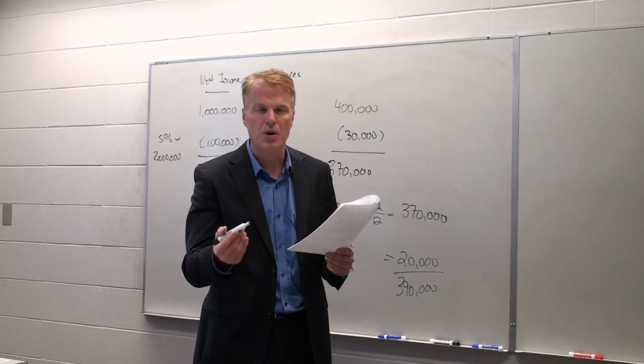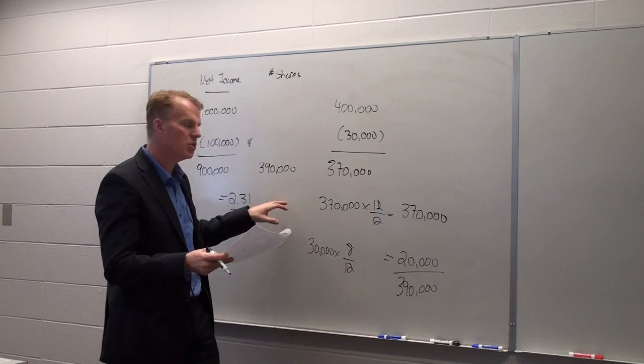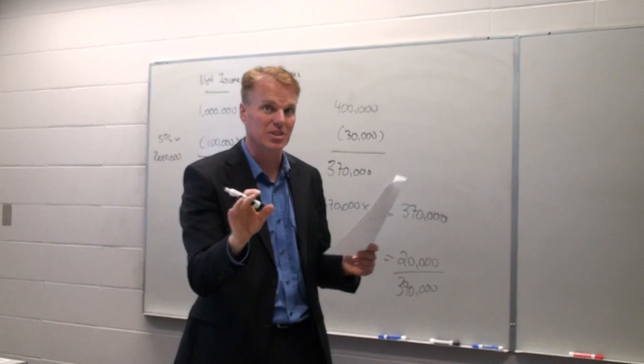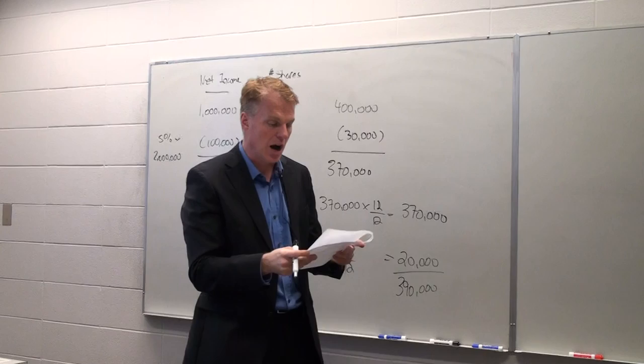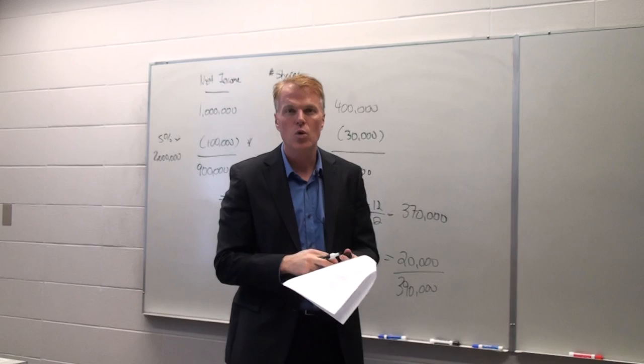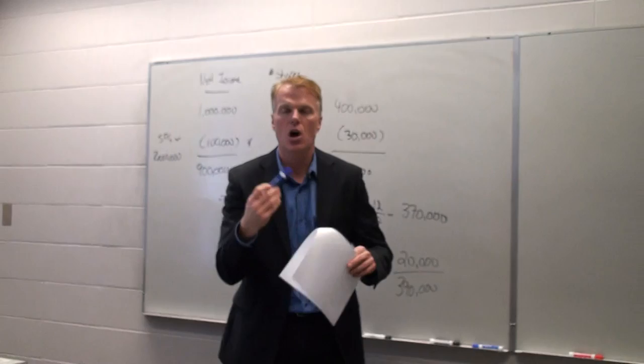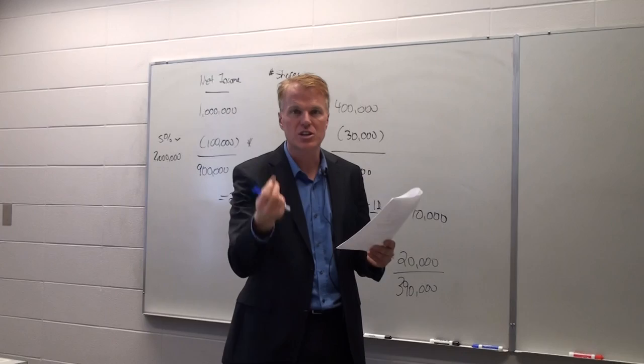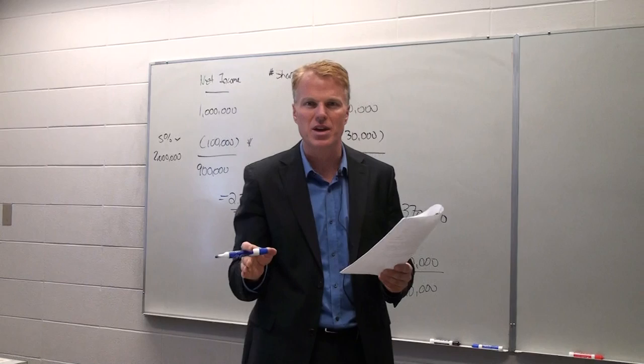Now we need to take a look at the diluted part. For the diluted part, what we have to always remember is that when we go through these calculations, $2.31 has to go lower. If any of the things that we do cause it to go up, it's anti-dilutive and we do not include it. Now, we've got 6% bonds, 8% bonds, and we have options. Options will always be the most dilutive because we don't change anything on the numerator side. Only the denominator, the number of shares, changes. So we always do options first.